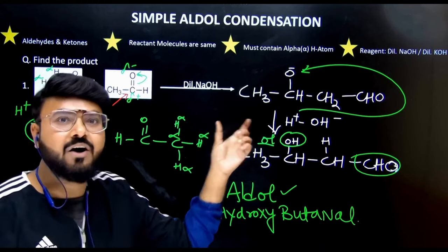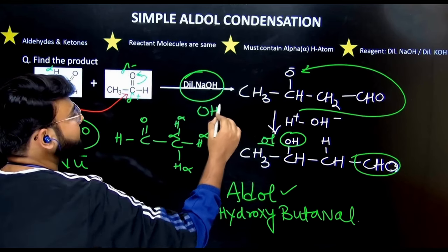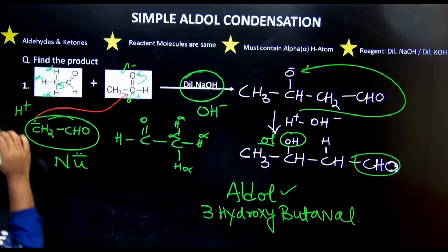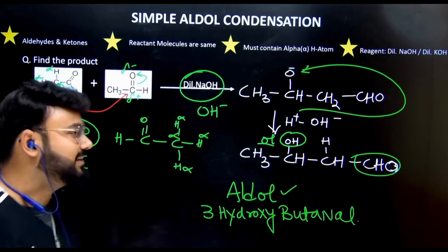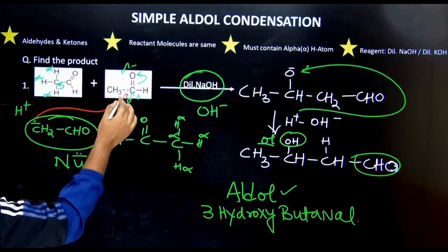After that, now see how the reaction will take place. So under the influence of dilute NaOH, OH ion will come out. OH ion will pull out the acidic alpha hydrogen. We know alpha hydrogens are highly acidic. So under the influence of OH ion, acidic hydrogen will come out. It will give the electron to carbon.